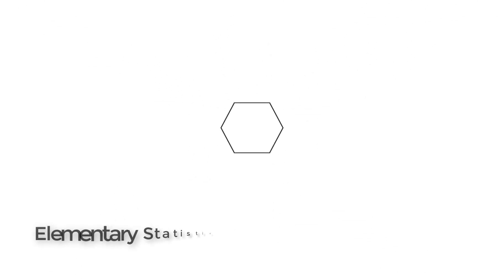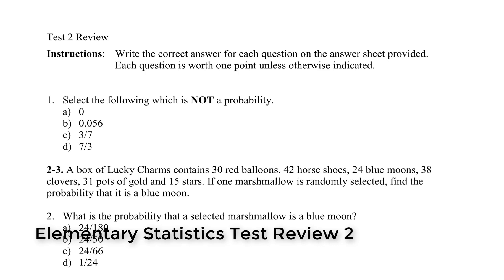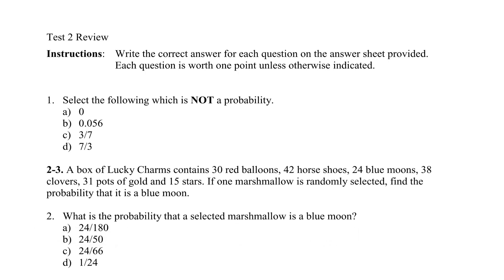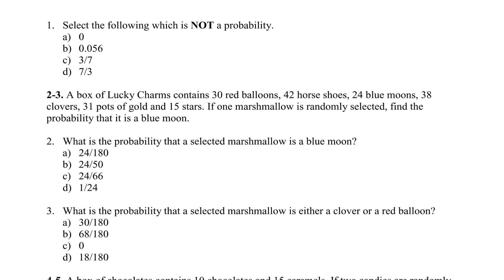This is a test review for an elementary statistics class covering probability and discrete probability distributions. We're going through it pretty quickly. First question: select which of the following is not a probability. Remember, probabilities have to be between 0 and 1. So 0 is okay, 3/7 is less than 1 and okay, but 7/3 is greater than 1, so that can't be a probability.